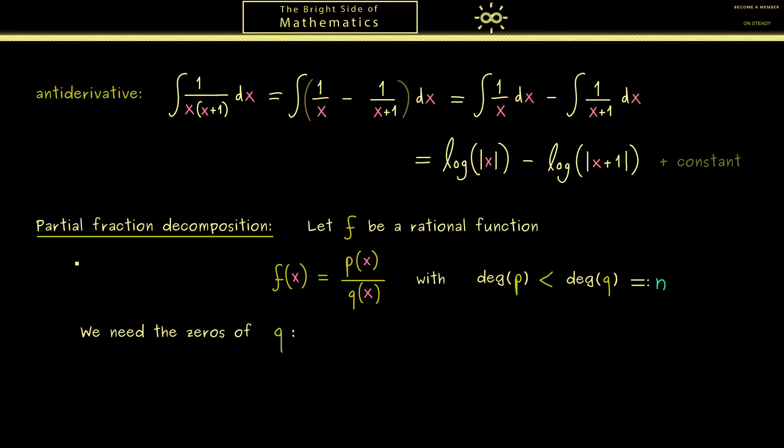And now in order to do the partial fraction decomposition as before we need the zeros of q. In other words, it's good to have such linear factors in the denominator. Therefore it's possible to distinguish three cases.